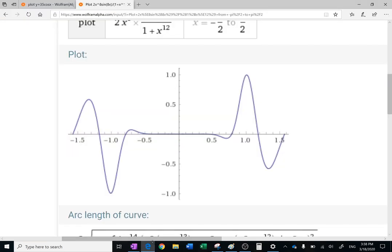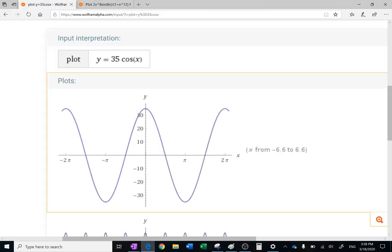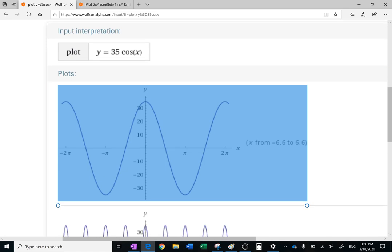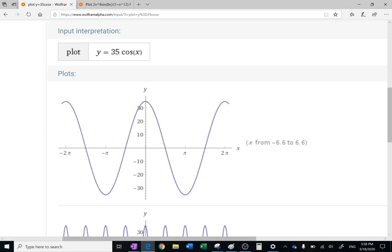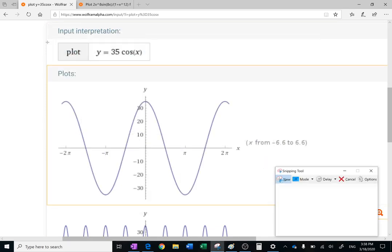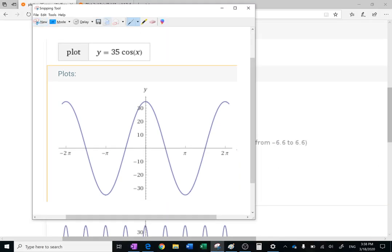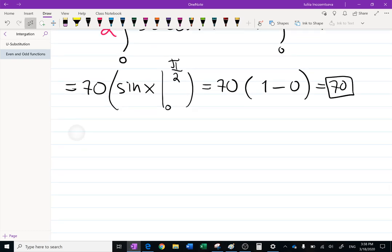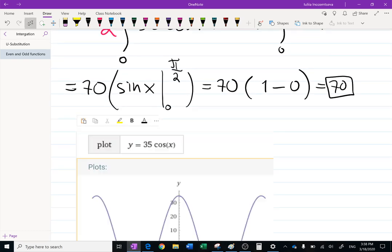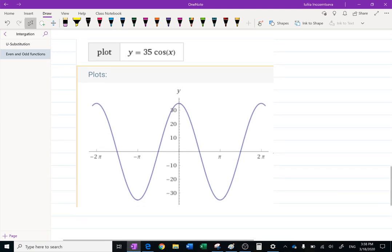Here's the graph of this function, y equals 35 cosine x. If I take this graph, copy it, and show it to you here, then we're working from negative pi over 2, it's over here, to pi over 2, it's over here. Negative pi over 2 and pi over 2.